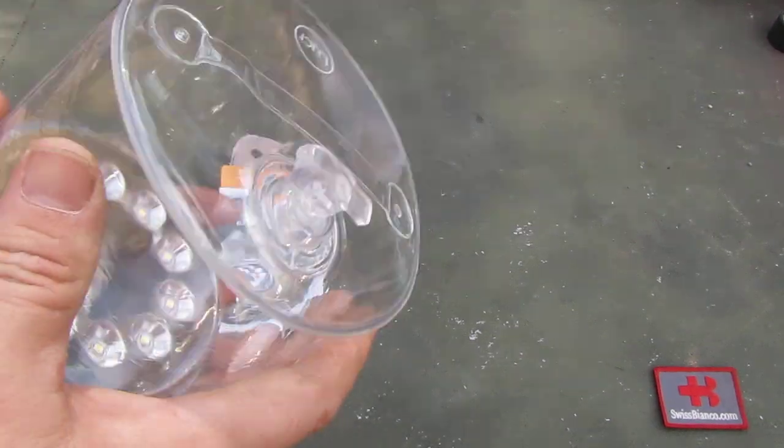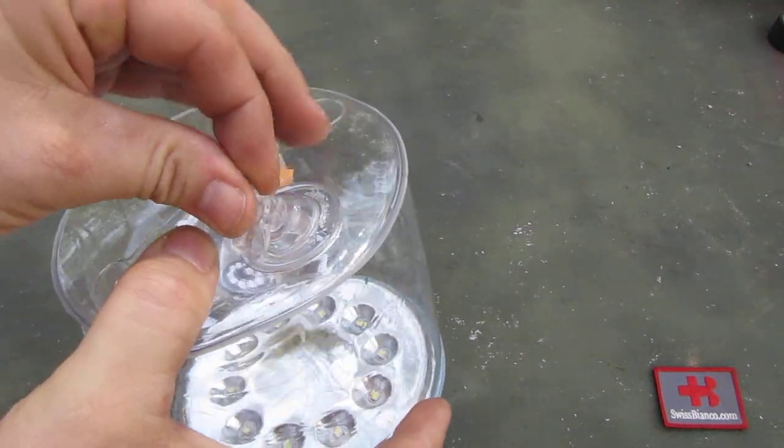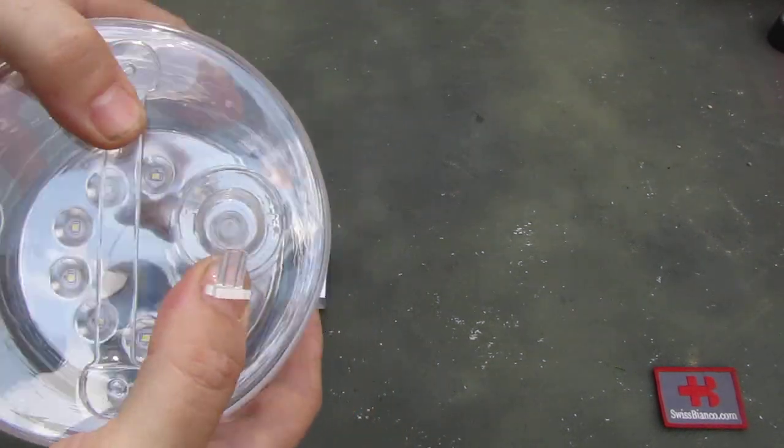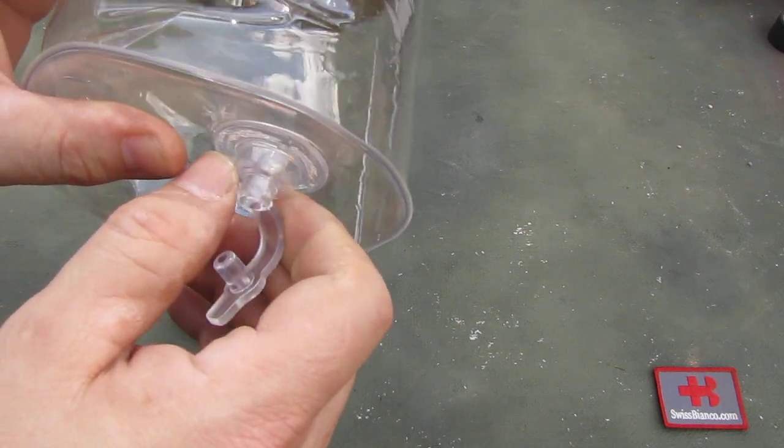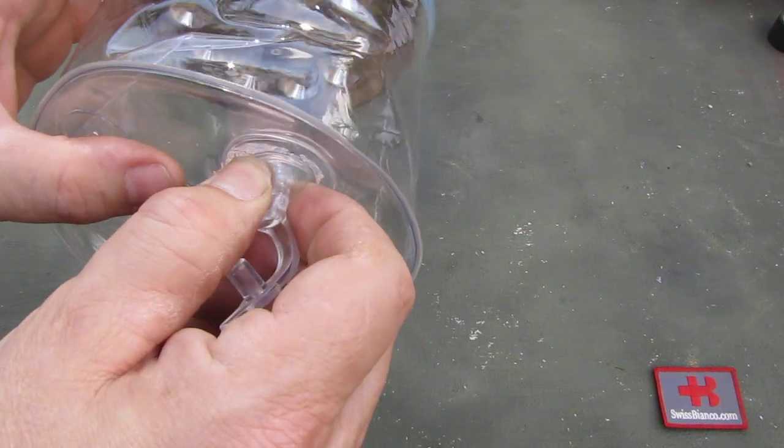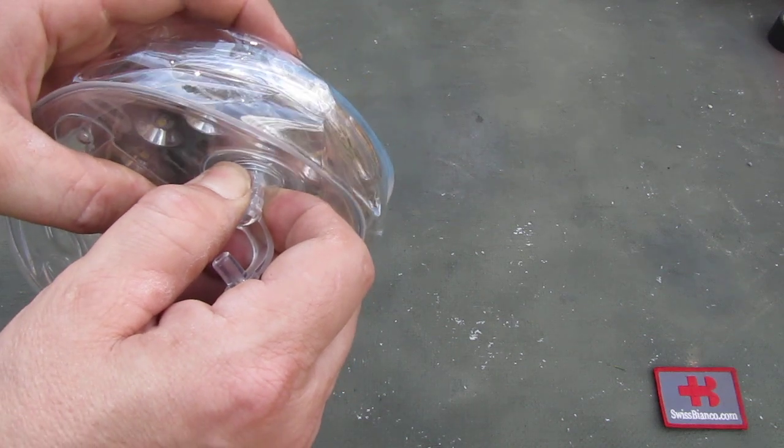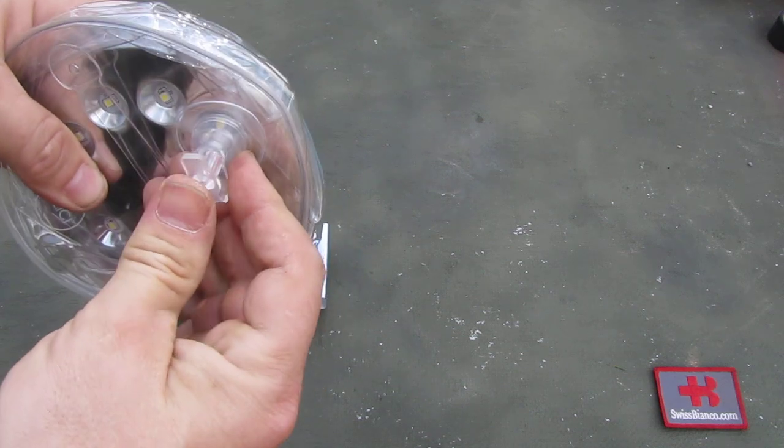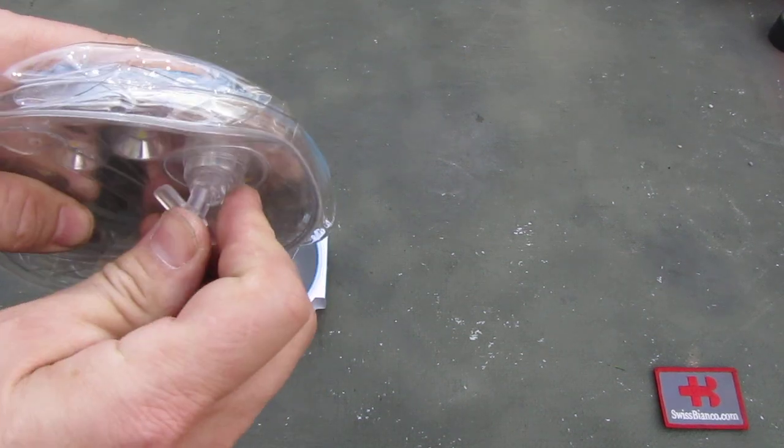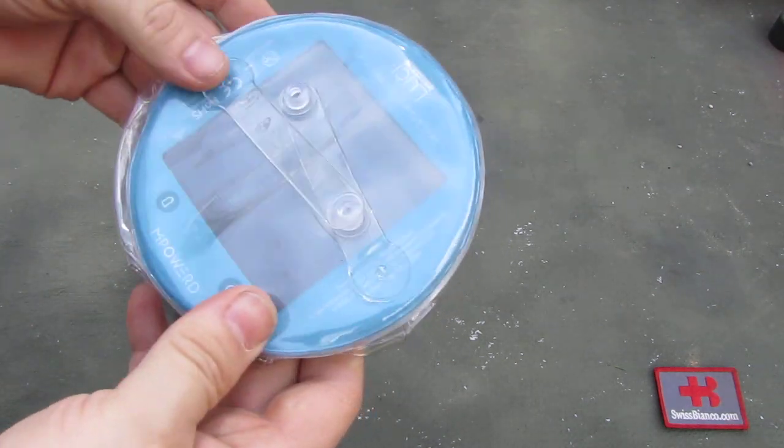Now to put it down, really easy - you open the valve so that the air can go out. You need to press it a bit so the air gets out as much as possible, and then you close the valve again.